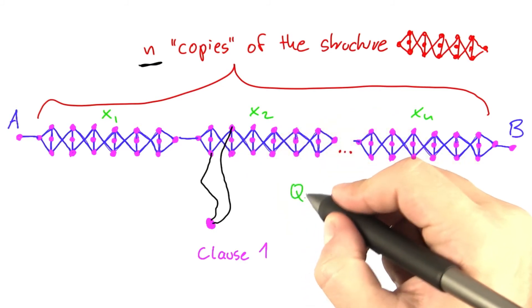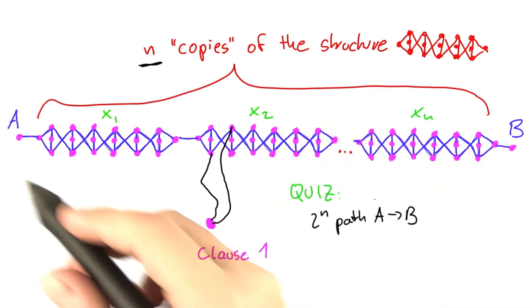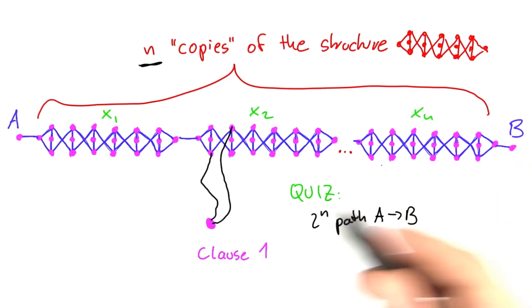And what I would like you to think about now is the following: there are 2 to the power of n shortest paths between A and B if we do not regard this vertex here.